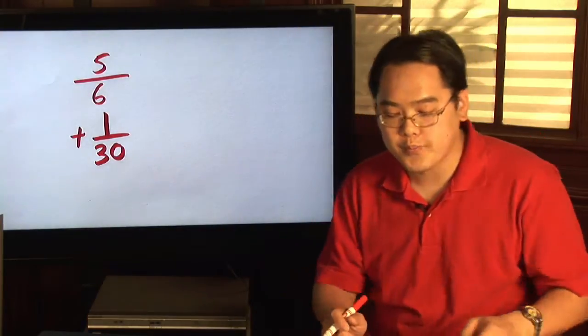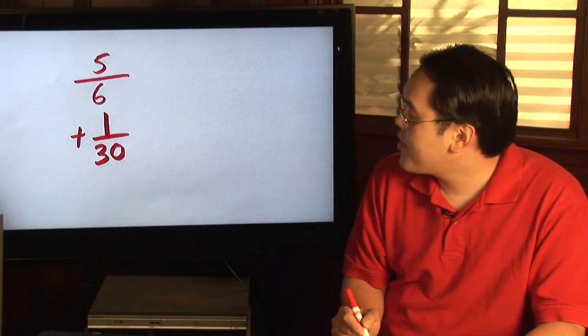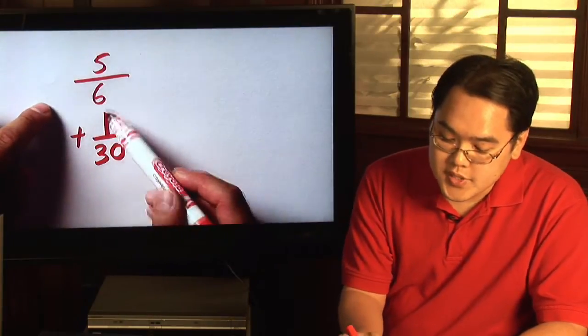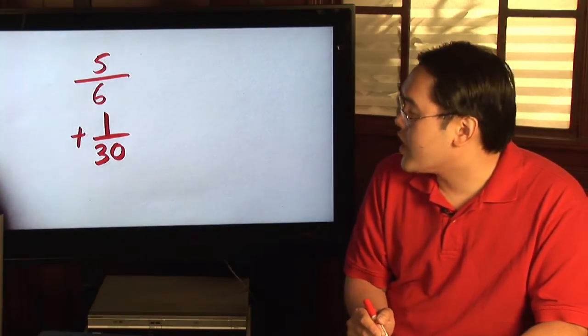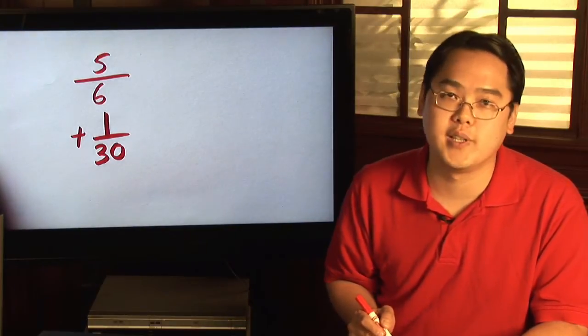So here's a quick example for you. Suppose you want to find out what five sixths plus one thirtieth is going to be. Now, since the denominators are not the same, you cannot add the two and call it six over thirty-six. That would just be completely wrong.